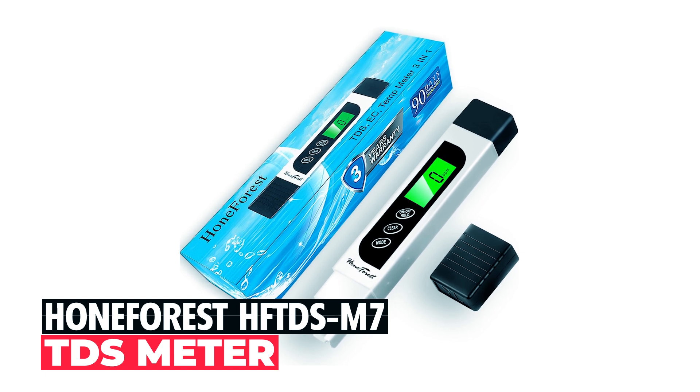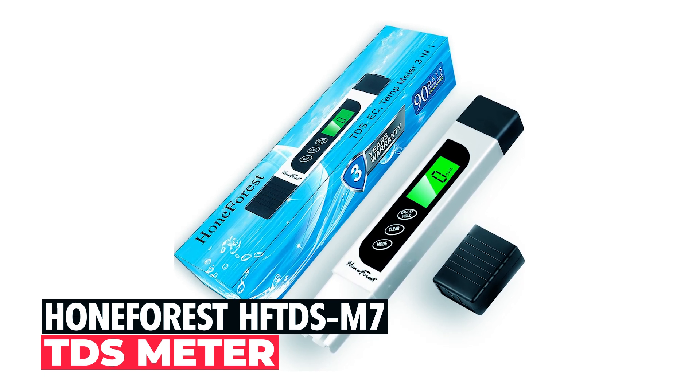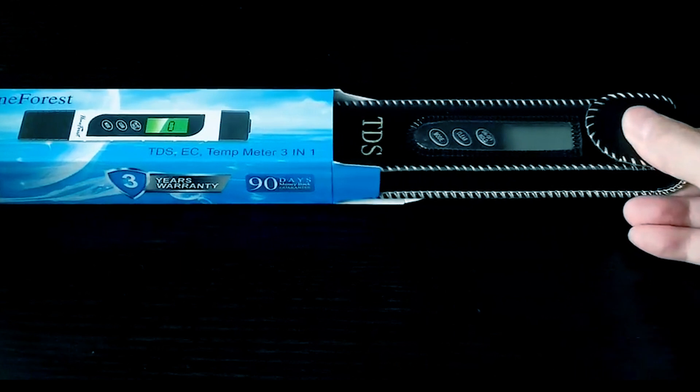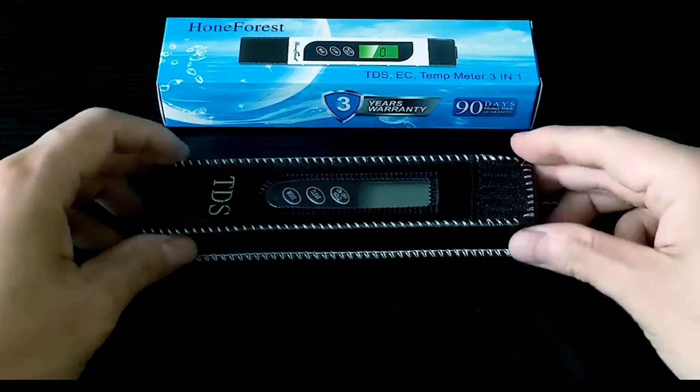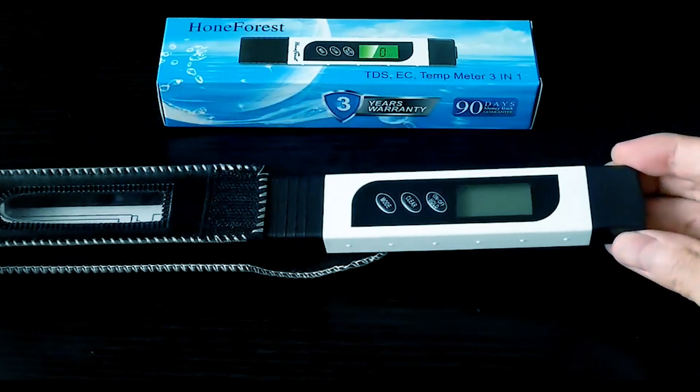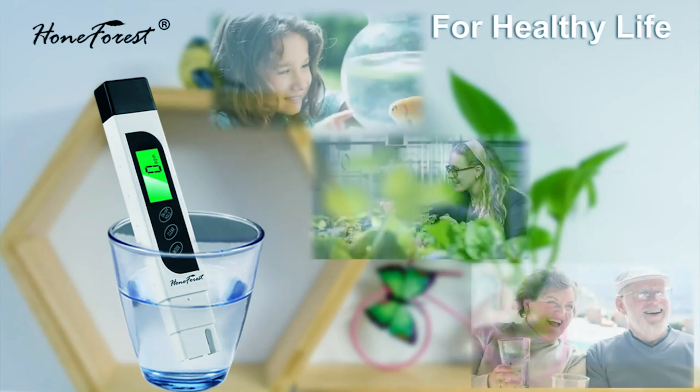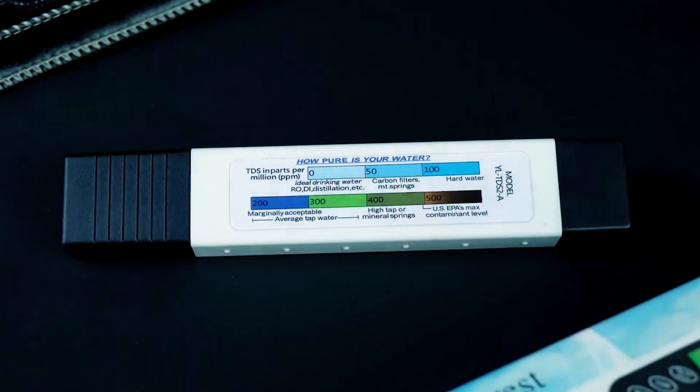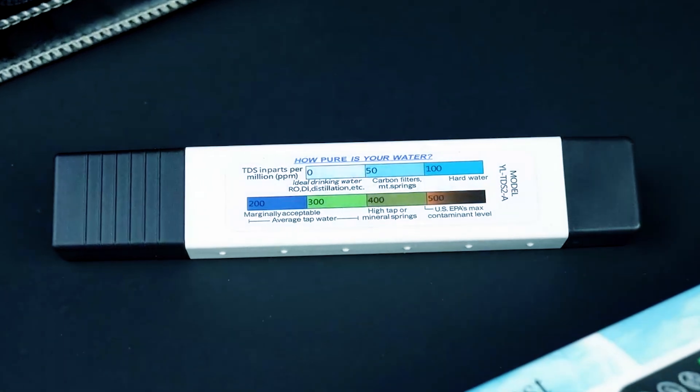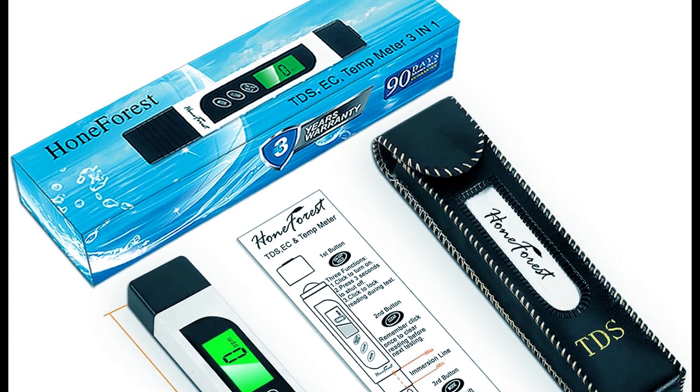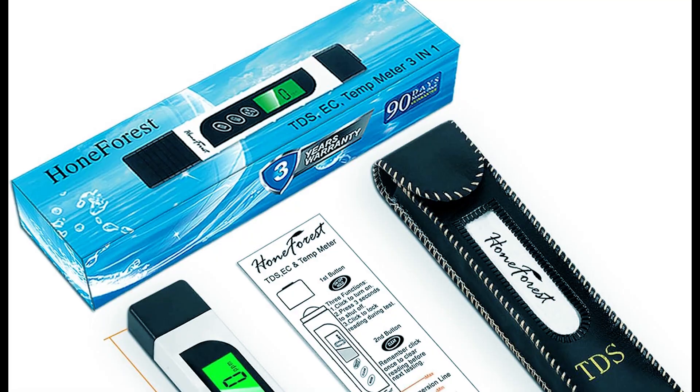Honeforest HFTDS M7 TDS Meter. The Honeforest HFTDS M7 TDS Meter is a versatile 3-in-1 device measuring temperature, electrical conductivity, and total dissolved solids. It features a premium titanium alloy probe for exceptional accuracy and an intelligent, efficient circuit for reliable performance.